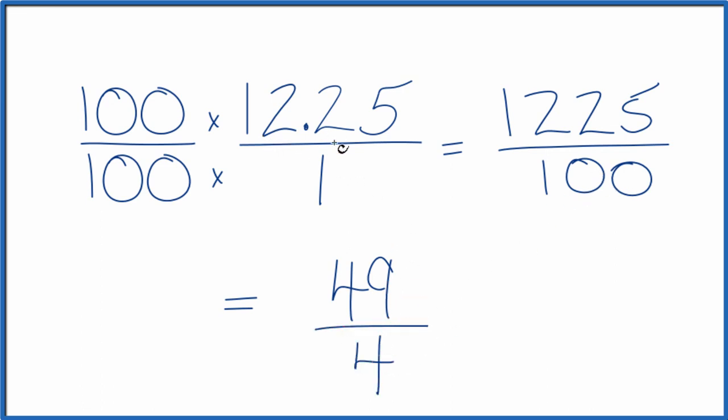So the decimal 12.25 equals the fraction 49 fourths. This is an improper fraction though, because 49, the numerator, is larger than the denominator here, 4. Let's change it to a mixed number.